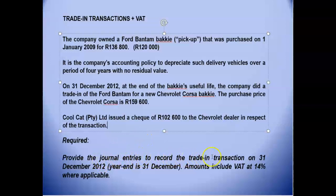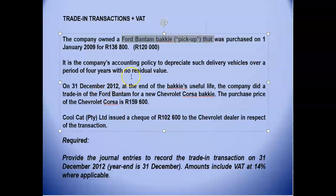We need to record journal entries for the trading transaction as at 31 December 2012, where amounts include VAT of 14%. Whenever you get a trading transaction, don't get confused — there are actually two transactions that you have to record. The first is the old asset that you have to remove out of your books, because you've sold it, recorded exactly the same as a normal sales transaction.